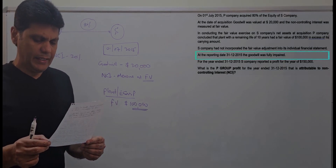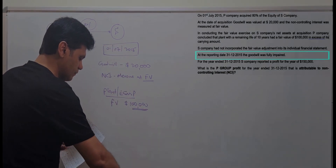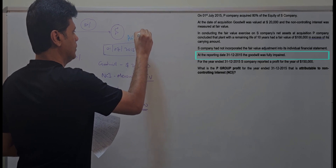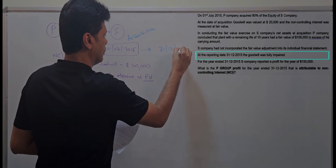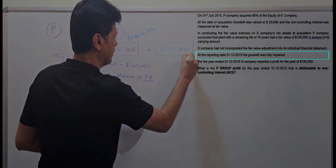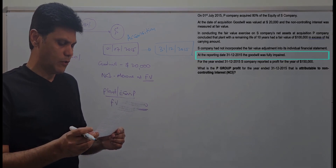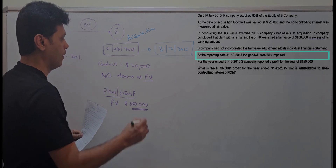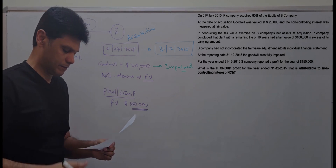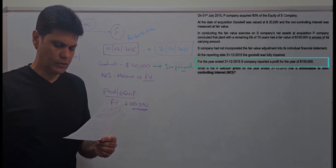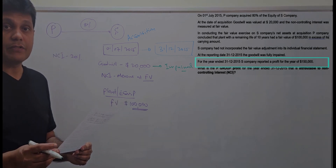At the reporting date of 31st December 2015, the goodwill was fully impaired. So this goodwill of 20,000 was impaired for the year ended 31st December 2015.